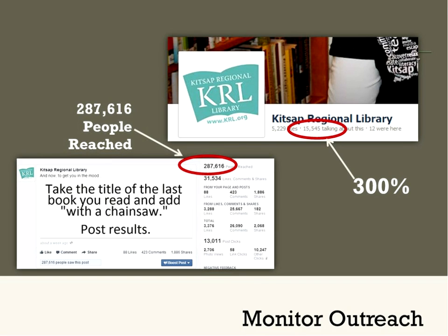The nice thing about various types of social media is that you can somewhat monitor your outreach. You can monitor how many people are talking about your programs, your posts, or your pictures, and how many are sharing them. Here are some examples of Facebook analytics. There are companies you can contract through for Twitter and other platforms, but I like what's free because budgets are limited, and I think you can pretty much get the same idea.